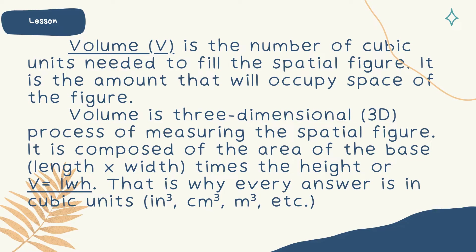So ang una nating spatial figure na pinag-aralan is the rectangular prism. It is composed of the area of the base. Area, as we all know, is length times the width. Then, if we add the height, we will multiply it by the height. So meaning, volume of a rectangular prism is equal to L times W times the height. That is why every answer is in cubic units — cubic inches, cubic centimeter, cubic meter, and others.